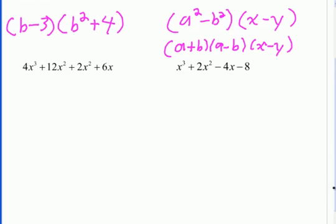So let's try these last two. So the first thing I'll look for here is the GCF. And here there actually is a GCF of X. So I'll factor that out. So pull out the X and you'll get 4X squared. Divide each term by X plus 12X plus 2X plus 6.